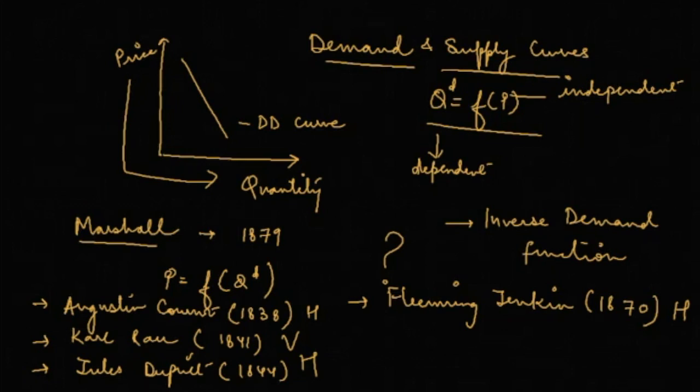So even historically there have been both kinds of demand curves where prices have been put on horizontal axis or vertical axis. The point to be understood here is that the demand curve that we follow today, which is Marshall's demand curve, the correct functional form for this demand curve is what is called the inverse demand function.